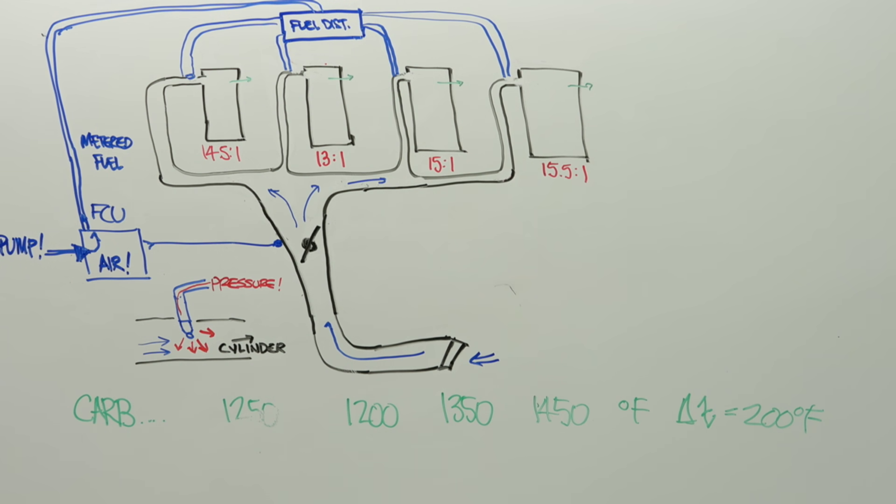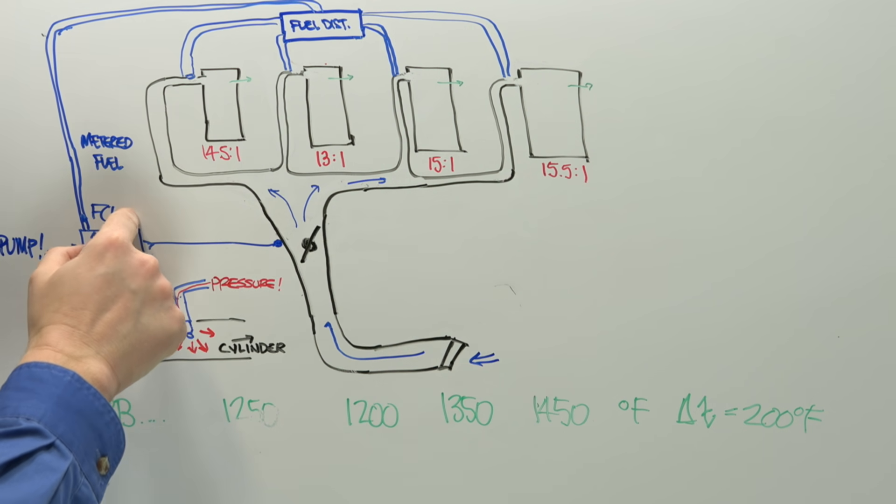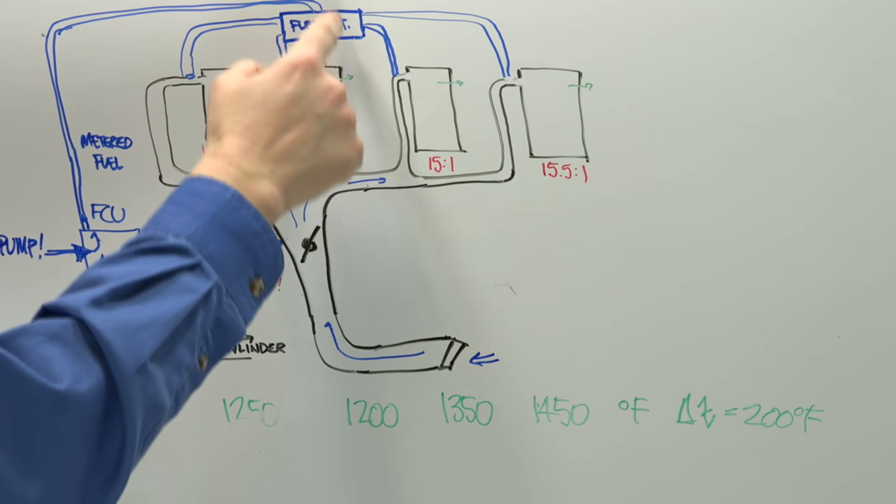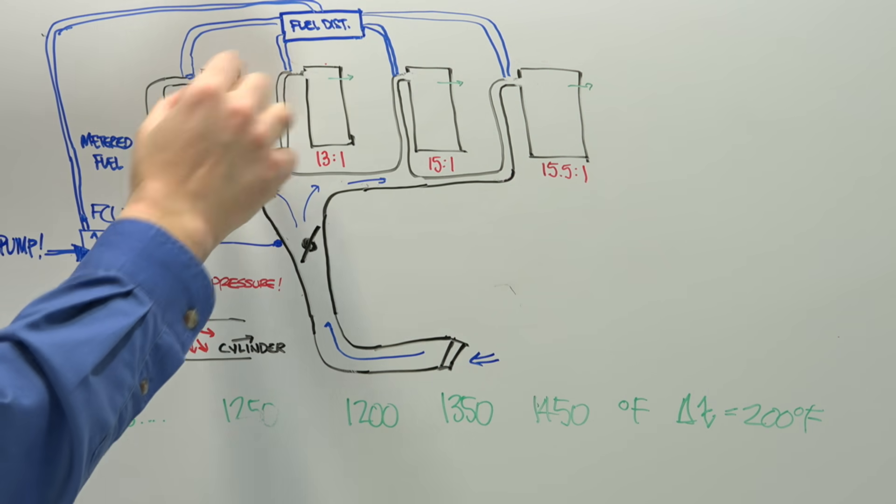Now, because the fuel control unit has sensed how much air is coming in, it can actually tell the fuel we need to send this much fuel to the distributor. We're going to send this much fuel under pressure. So what now happens is these ratios here actually can become much, much tighter.